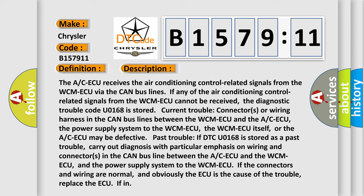Here is a short description of this DTC code. The A/C ECU receives the air conditioning control related signals from the WCM ECU via the CAN bus lines. If any of the air conditioning control related signals from the WCM ECU cannot be received, the diagnostic trouble code U0168 is stored. Current trouble: connectors or wiring harness in the CAN bus lines between the WCM ECU and the A/C ECU, the power supply system to the WCM ECU, the WCM ECU itself,